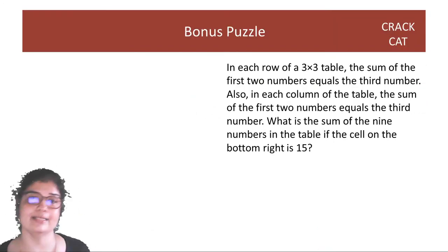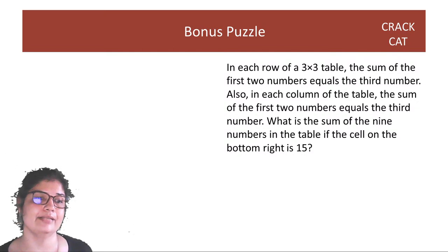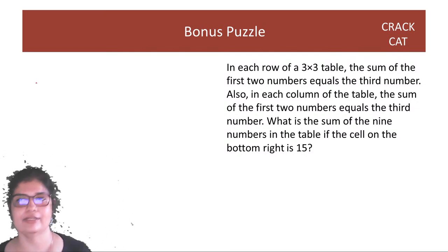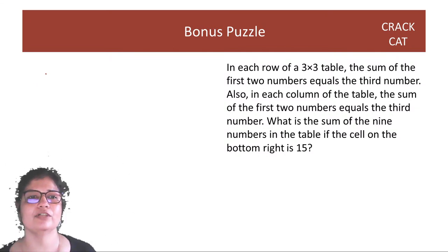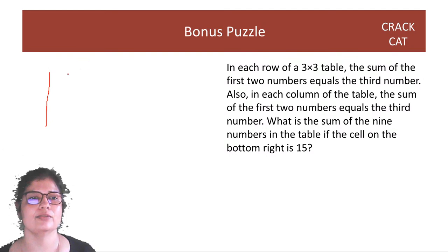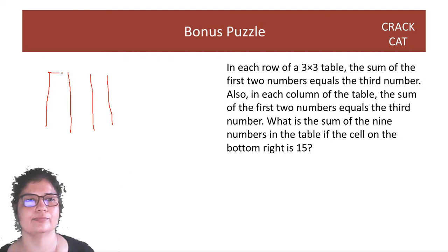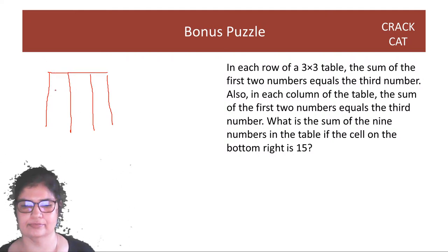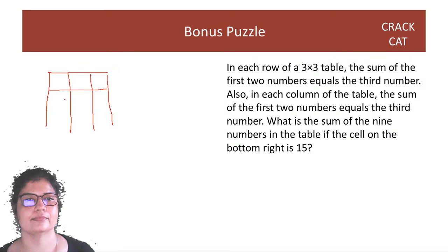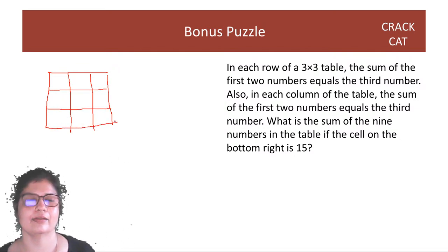As usual, we'll start off with a puzzle that I gave you all in the morning. You have a 3x3 table. The sum of the first two numbers equals the third number in each row.